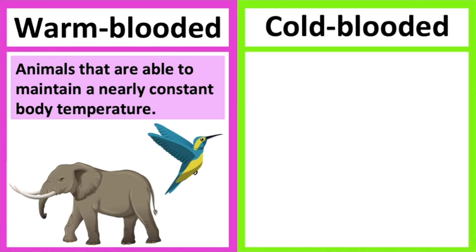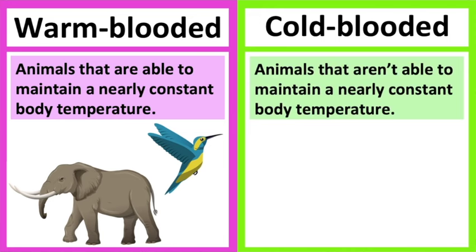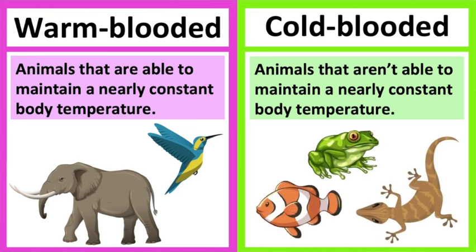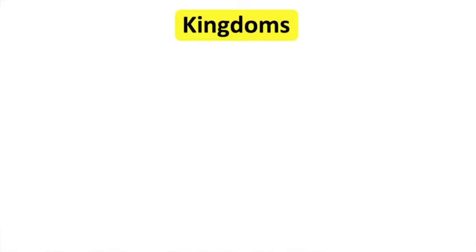Cold-blooded animals aren't able to maintain a constant body temperature — their temperature changes according to the temperature of the environment. Therefore, these animals are unable to survive in extreme temperatures. Reptiles, amphibians, and fish are groups of cold-blooded animals.